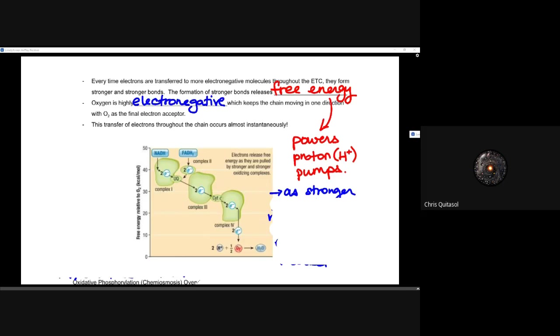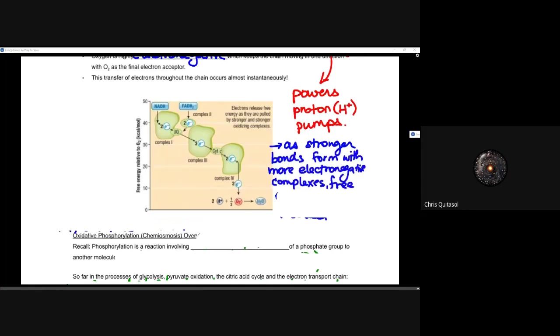So this transfer of electrons throughout the chain occurs almost instantaneously. It's very quick, very fast. So again, as we alluded to with regards to that electron transport chain, those stronger bonds are formed with more electronegative complexes. That free energy is released and that free energy can do work to pump that proton out.